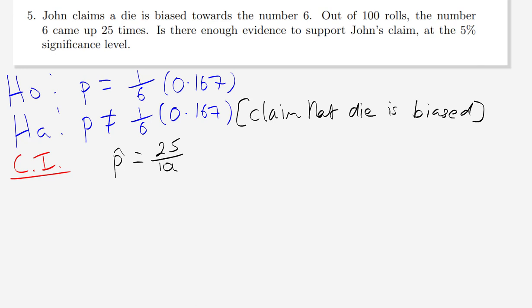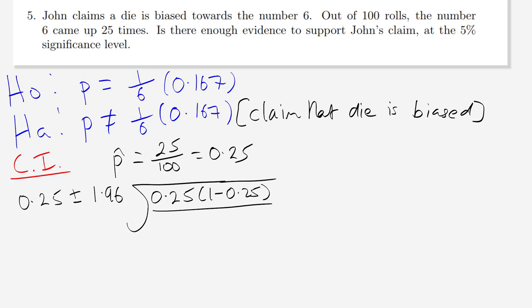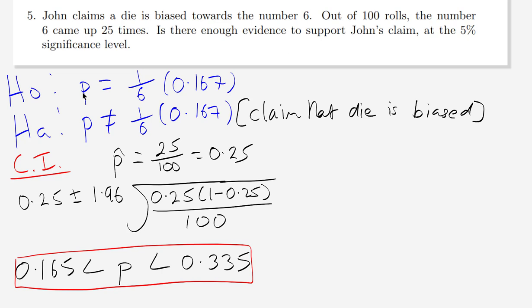Our confidence interval: p-hat is 25 out of 100, so 0.25. The confidence interval is 0.25 plus or minus 1.96 times the square root of (0.25 times 0.75) all over 100. The lower bound is 0.165 and the upper bound is 0.335.